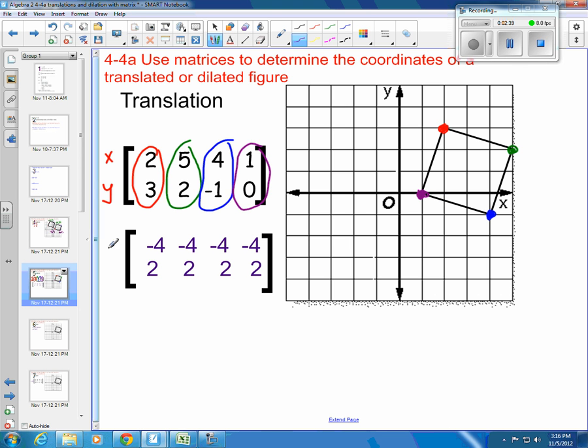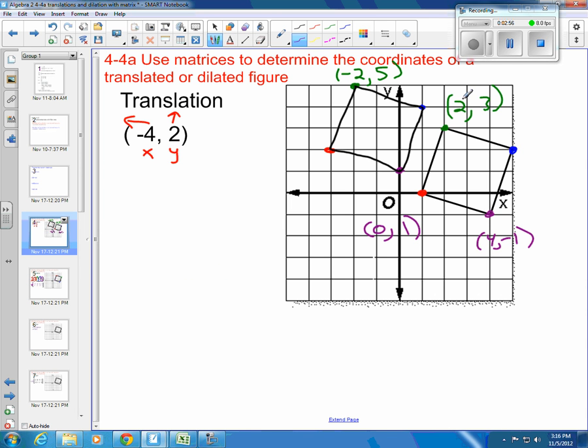Then if I take this matrix down here and I add it to the previous matrix, notice that all of my top coordinates are -4 and all of my bottom coordinates are 2, which means I'm going to subtract 4 from my x and I'm going to add 2 to my y, which is exactly what I did back here. I took the 2 and I subtracted 4 to get -2, and I started at 3 and I added 2 and I got 5.